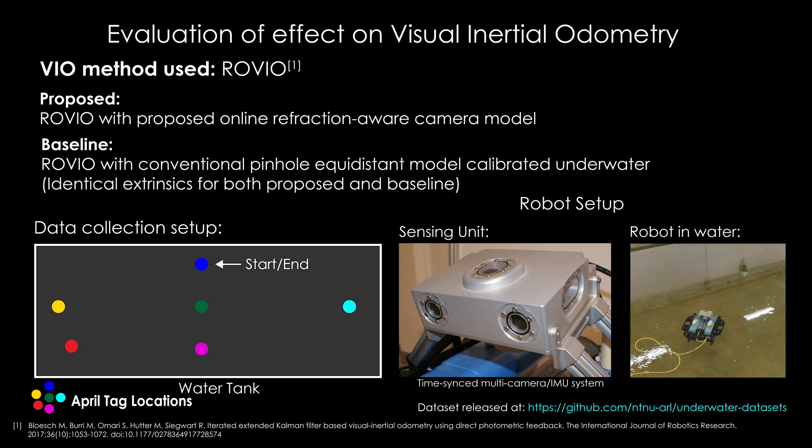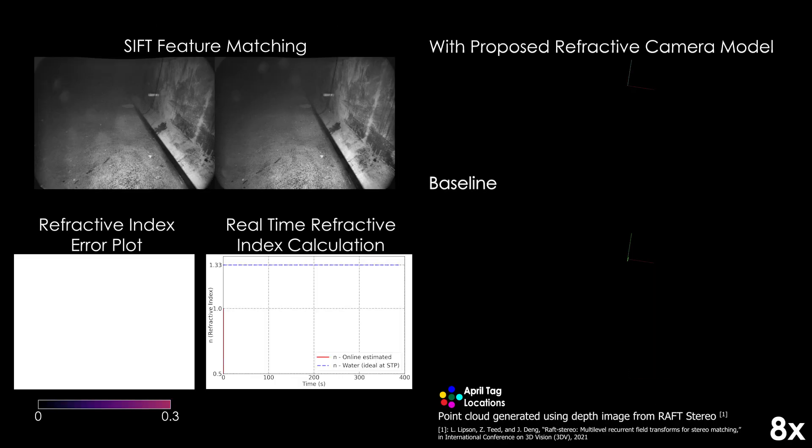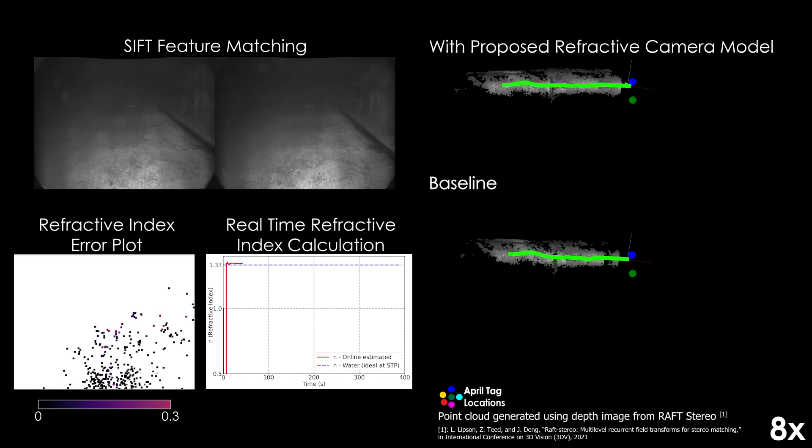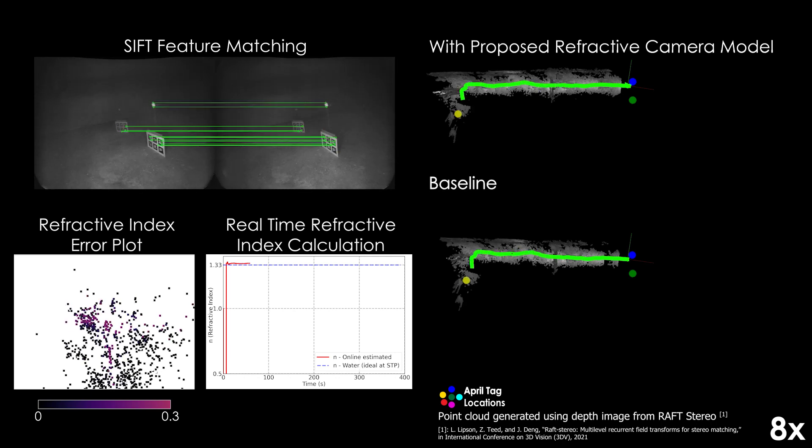We evaluate the effect of using the proposed model for visual inertial odometry using a state-of-the-art method, namely ROVIO. We estimate odometry with online image rectification using the proposed model and compare it with a baseline that uses conventional pinhole equidistant model calibrated in water.